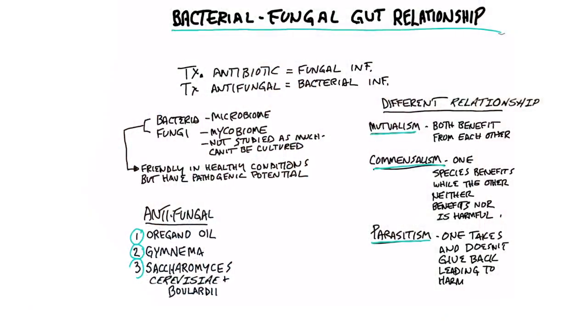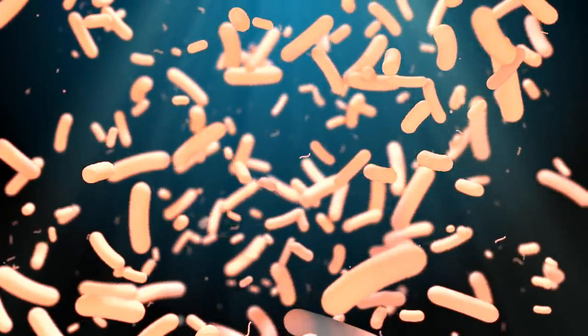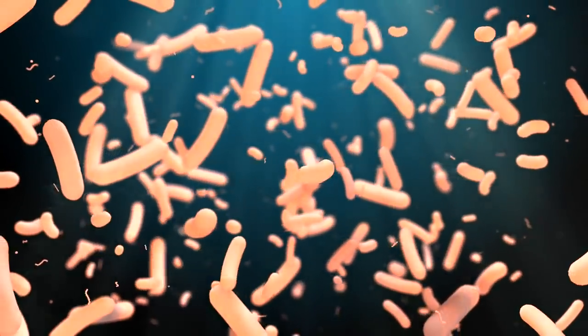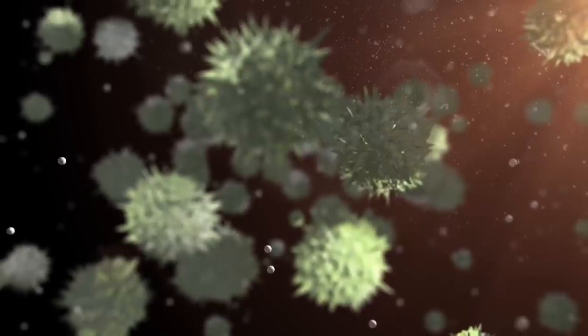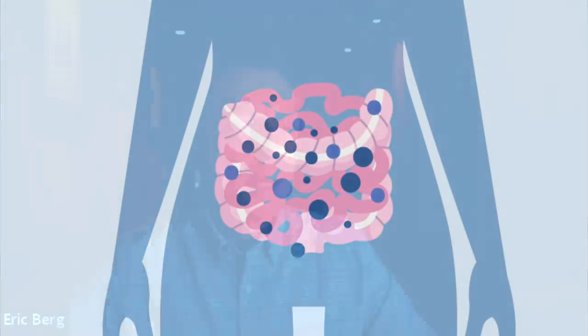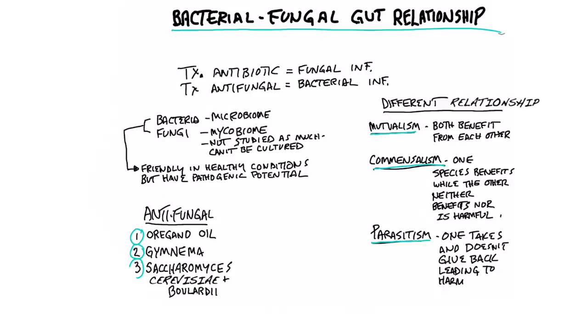I want to talk about the relationship between the friendly bacteria you have in your gut and around your body, as well as the friendly fungus. People think that your microbiome is just primarily bacteria, but you have a lot of different species: viruses, different types of fungus like yeast. They're all supposed to live together in harmony. All the friendly bacteria in your gut is called the microbiome, and all the friendly fungus is called the mycobiome.